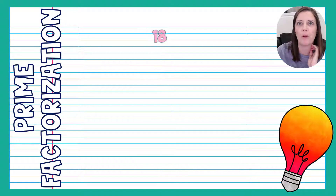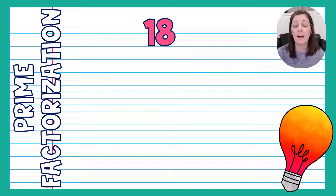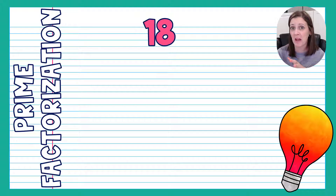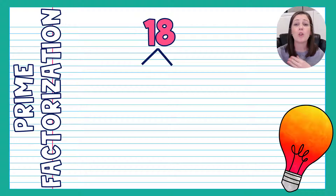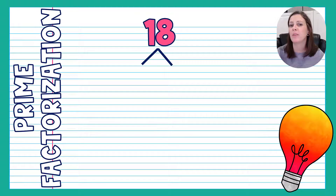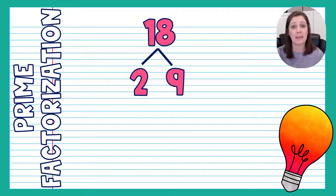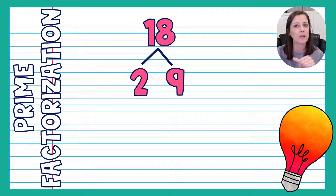Let's look at another example: 18. Again, I have multiple ways to break this down. I can do 2 times 9 or 3 times 6 — not 1 times 18, since we don't use 1. You can choose either pair and should end up with the same answer. I'll go with 2 and 9. Looking at 2: it's prime, the only way to get it is 1 times 2, so I circle that branch and it's done.